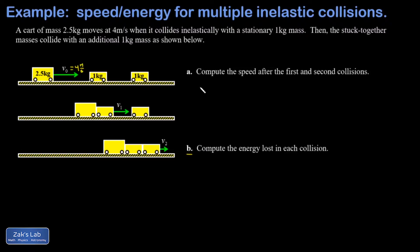Let's do the first collision in part a. For momentum to be conserved, I have my initial momentum m1 v1 has to be equal to m1 plus m2, because they stick together, times v2. So plugging in the numbers here, m1 is 2.5 kilograms, v1 was 4 meters per second.